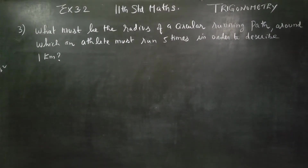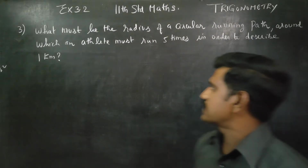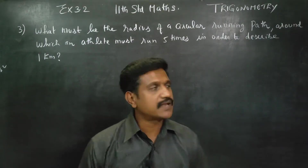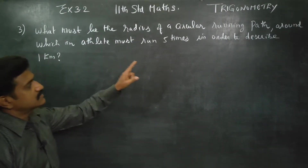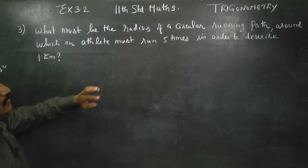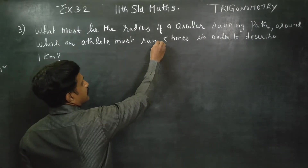Dear Learn Standard Students, I am Metro Karanagaran. In exercise number 3.2, sum number 3: what must be the radius of the circular running path around which an athlete runs 5 times in order to describe 1 kilometer?